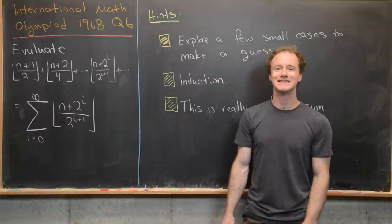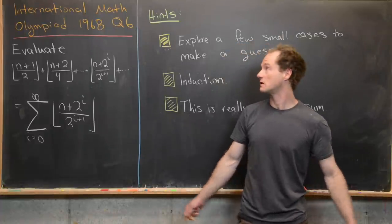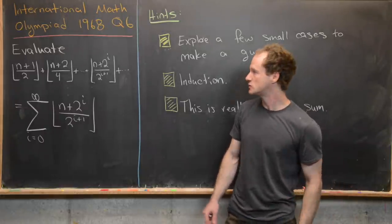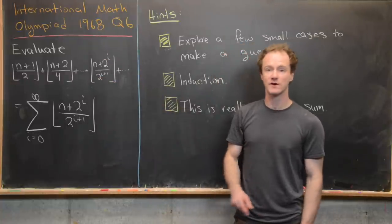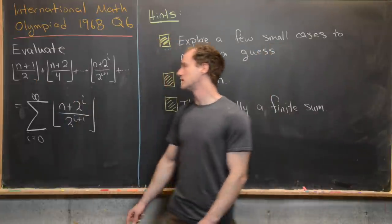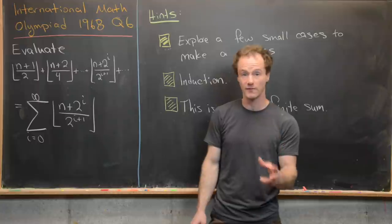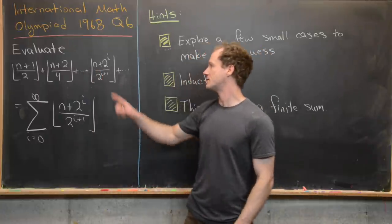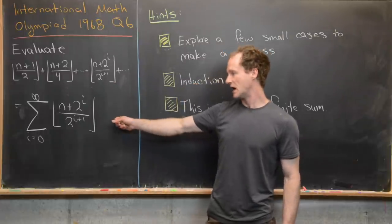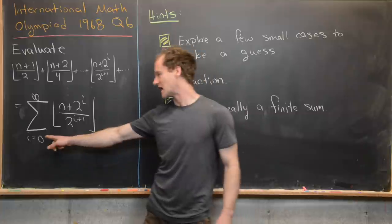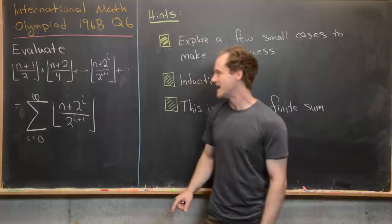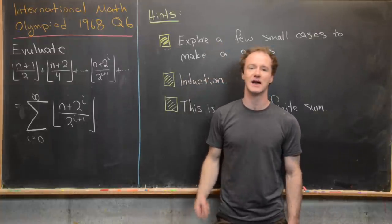Here we're going to look at a problem from the 1968 International Mathematical Olympiad, question 6. Our goal is to find a nice closed form for this expression involving the floor function for any positive integer n. We've got the floor of (n + 2^i) / 2^(i+1), summed as i goes from 1 to infinity.